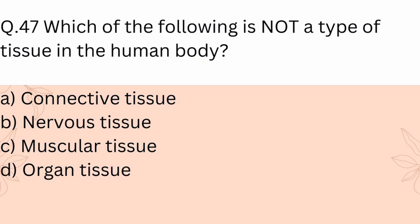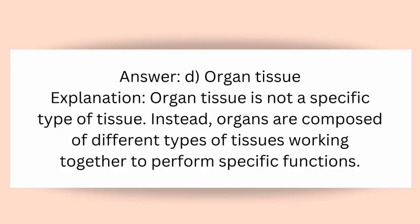Question 47: Which of the following is not a type of tissue in the human body? A) Connective tissue, B) Nervous tissue, C) Muscular tissue, D) Organ tissue. Answer: D) Organ tissue. Explanation: Organ tissue is not a specific type of tissue. Instead, organs are composed of different types of tissues working together to perform specific functions.